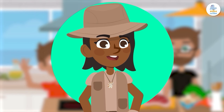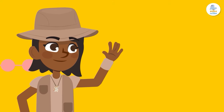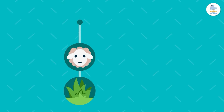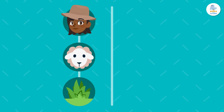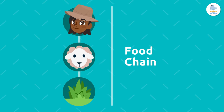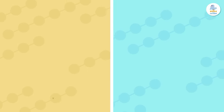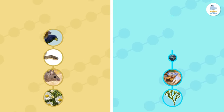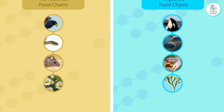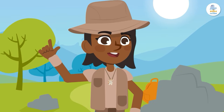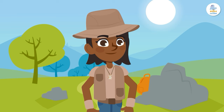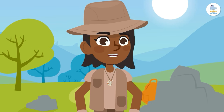But first, do you remember what a food chain is? A food chain is a process that shows how living things are connected by what they eat. We have already learned to classify aquatic and terrestrial food chains like these. But did you know that there's another way to classify food chains? Let's find out more about it.